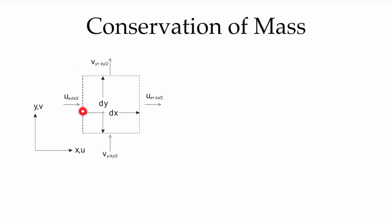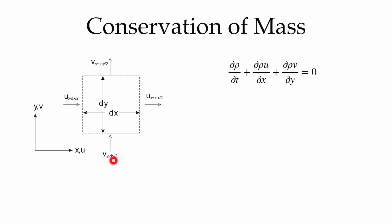For conservation of mass, if we draw a two-dimensional control volume with a u velocity in the x direction and a v velocity in the y direction, we have flows going into and out of the faces. Summing those up, the density may be changing inside our volume, or the mass flow rho times u carried through the x-faces differs from the outflow. For a compressible flow the full continuity equation applies, and for incompressible flow we're left simply with the divergence of the velocity — du/dx plus dv/dy equals zero.